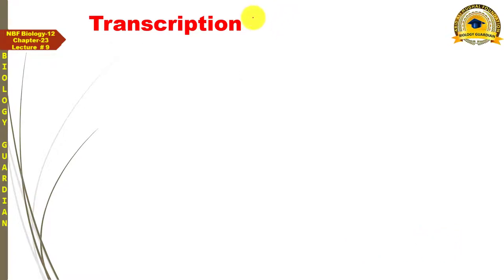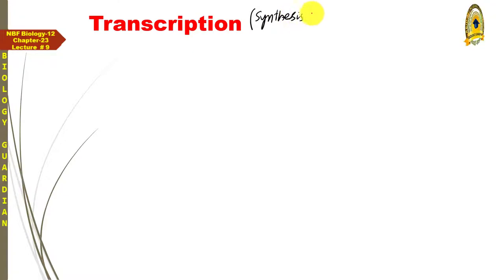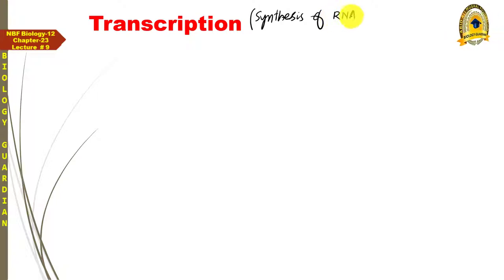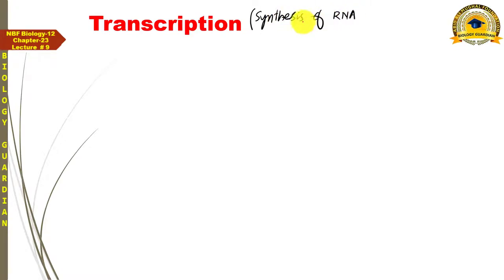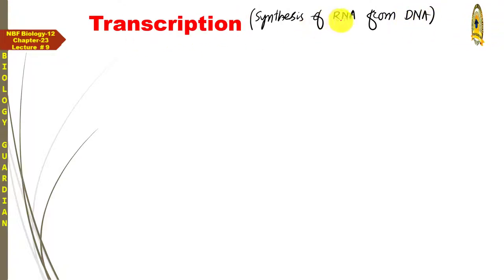Transcription کو generally define کرتے ہوئے آپ اس طرح کہیں گے: synthesis of RNA from DNA is called transcription۔ اگر آپ mRNA بھی لکھیں تو کوئی حرج نہیں۔ یاد رہے کہ باقی RNA کی formation بھی transcription کرائے گی، لیکن یہاں ہم ان genes کا expression پڑھ رہے ہیں جن سے آگے translation بھی ہونی ہے، اس لیے پہلے mRNA synthesize ہوگا۔ Synthesis of RNA from DNA is called transcription۔